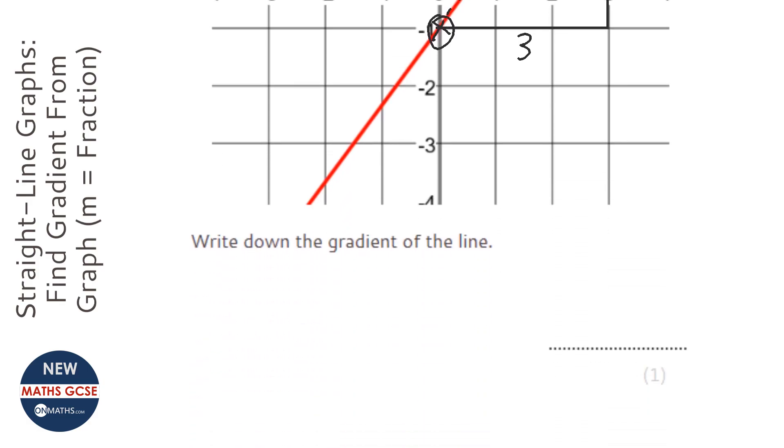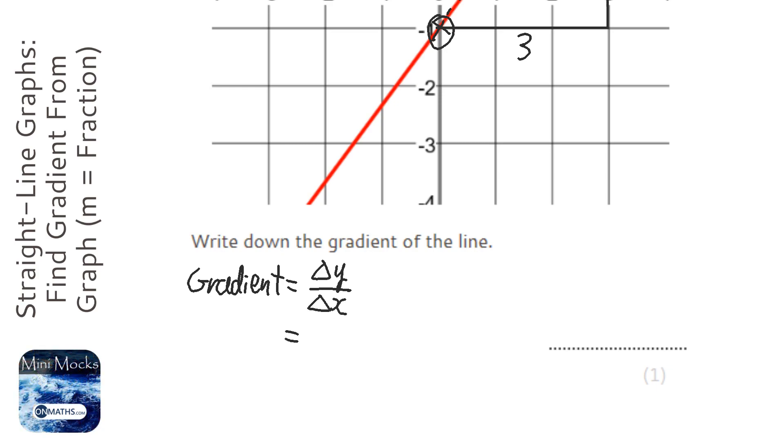Gradient is change in y over change in x. So y has changed four, x has changed three, so the gradient is four over three, or you could write that as one and a third.